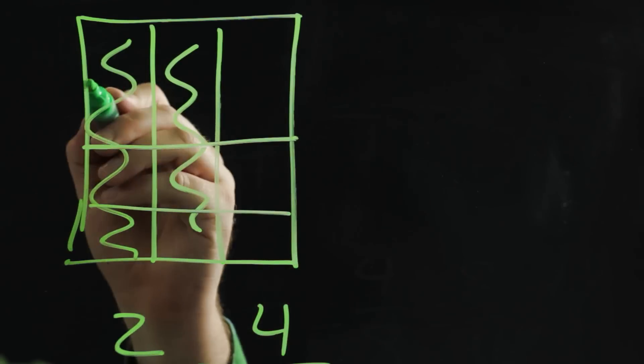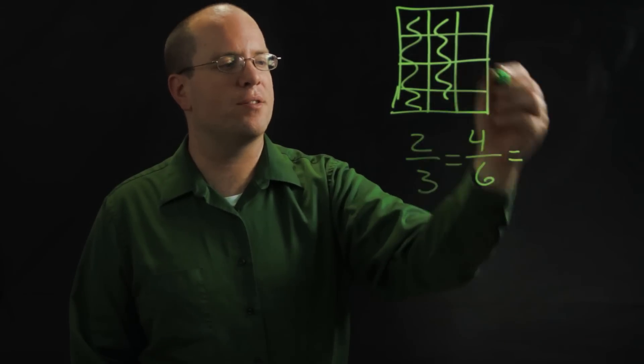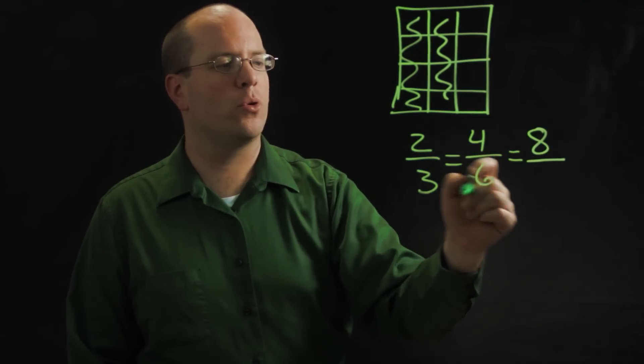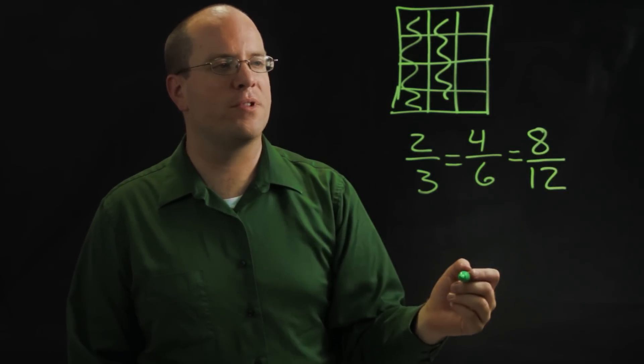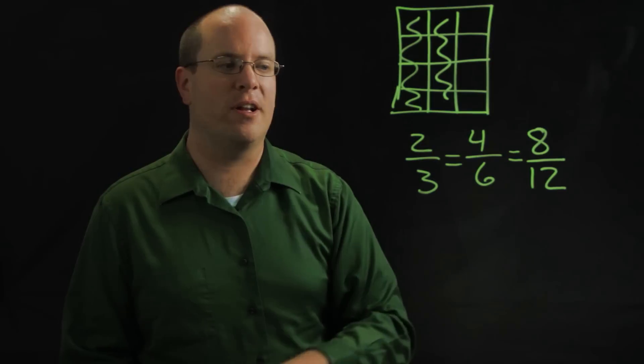And if I cut it again, I can now see that I have eight pieces shaded out of twelve. So eight twelfths. And again I can continue cutting that into smaller pieces and generating equivalent fractions.